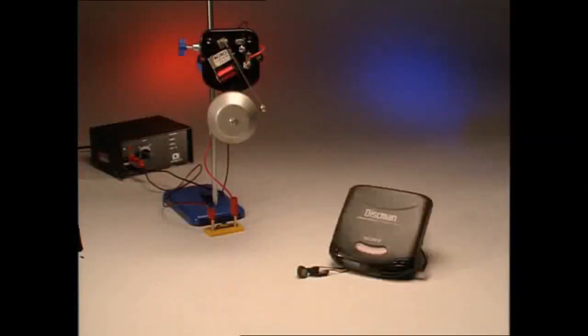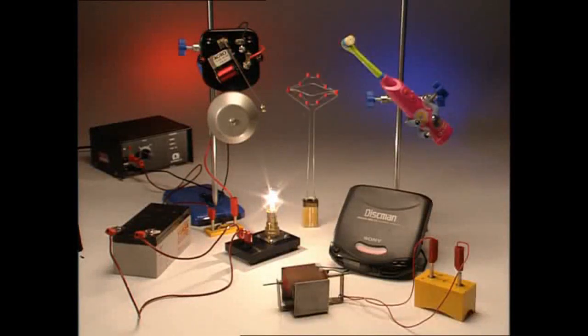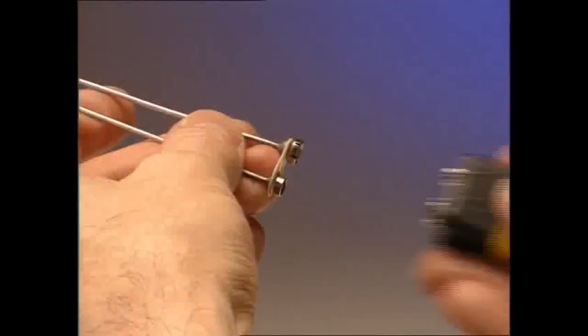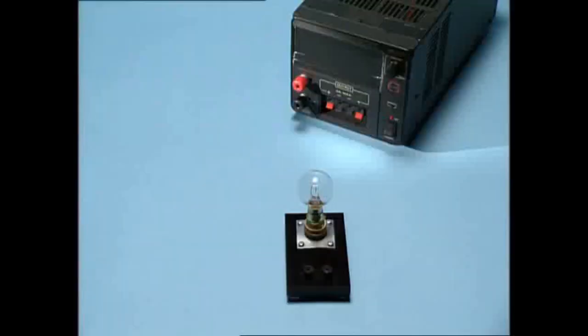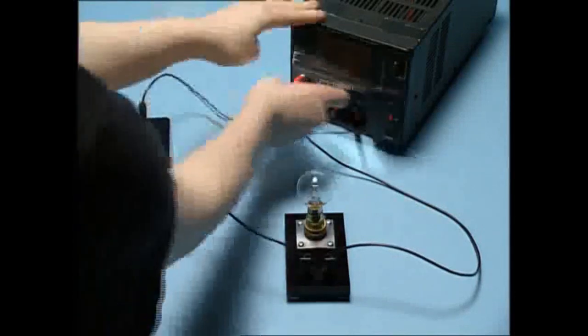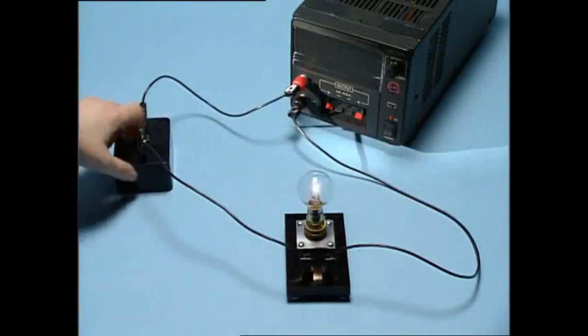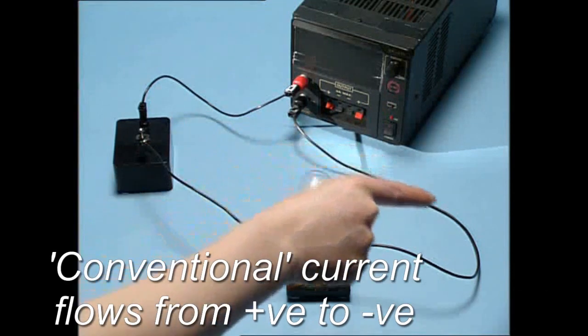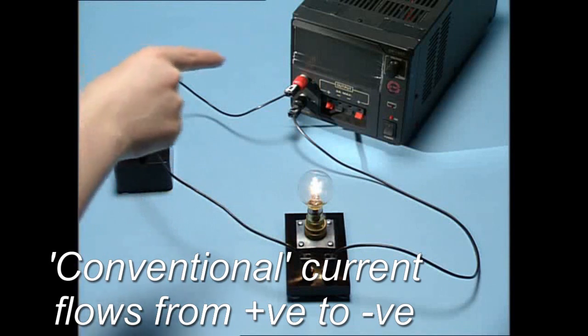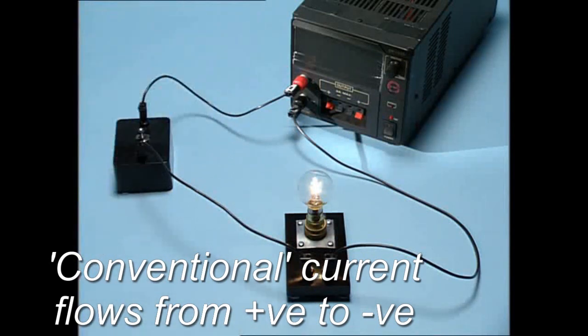There are many small electrical devices in everyday use. All have three things in common: a source of electrical energy, a path for the electric current, and a component that uses electricity to work. Connecting them together creates a circuit. Switching on causes an electric current, and the component works. Electric current is a flow of electrons. Electrons are negatively charged, and so they travel away from the negative terminal and towards the positive terminal.